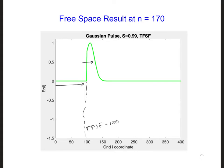Here is a snapshot of the easy fields in the primary grid at 170 time steps. At this point, the Gaussian is still propagating into the total field region.